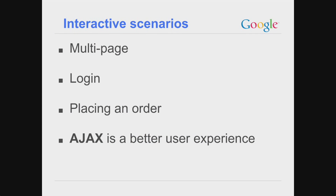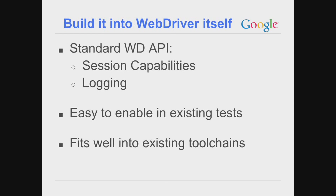Why not integrate performance testing into WebDriver itself? WebDriver already has a logging API which fits nicely with that purpose. Basically, when you create a WebDriver instance you ask it to collect certain types of logs, and when you're done with the test you ask WebDriver to give you back those logs. Why not enable performance instrumentation of the pages under test as the test runs? That would fit very nicely into an existing toolchain, transparently, using any existing functional test.